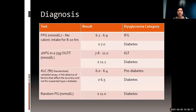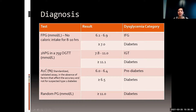How do you diagnose diabetes? There are four different ways. Fasting blood sugar — no caloric intake for 8 to 10 hours — of 6.1 to 6.9 means impaired or pre-diabetes; above 7.0 means diabetic. A two-hour oral glucose challenge test with 75 grams of sugar: between 7.8 to 11.0 is impaired glucose tolerance; above 11.0 is diabetic. Hemoglobin A1c between 6.0 to 6.4 is pre-diabetic; above 6.5 is diabetic.